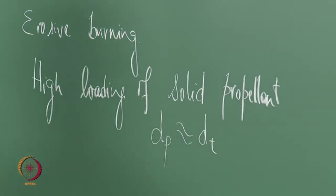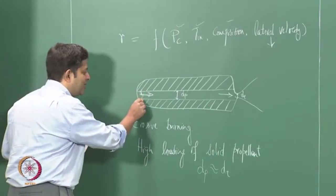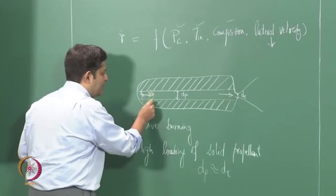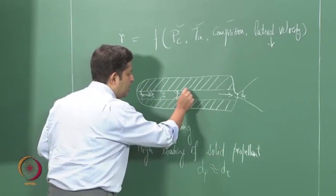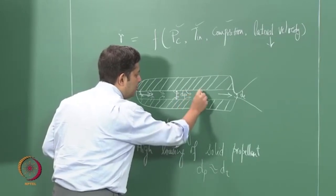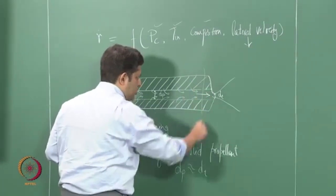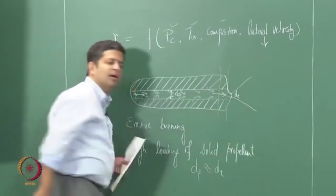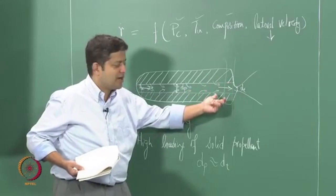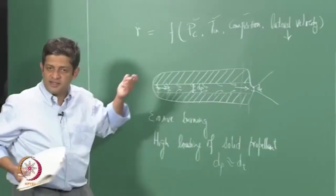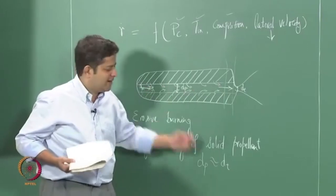Why does this happen? From the head end to the nozzle end there is continuous mass addition because of burning. The mass being added is also flowing through the port. Near the nozzle end the flow rate is very similar to what is going to the throat, so flow rates are very high. When flow rates are very high there is additional heat transfer due to convection, and the burn rates in these portions can be higher — that is known as erosive burning.